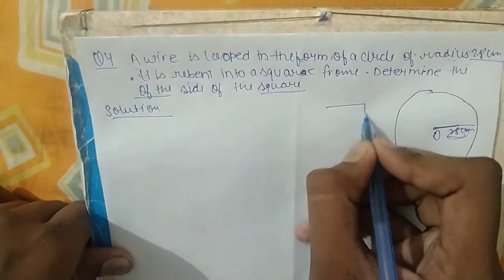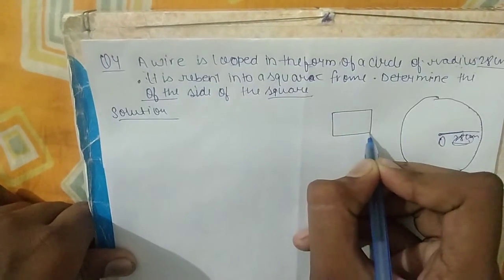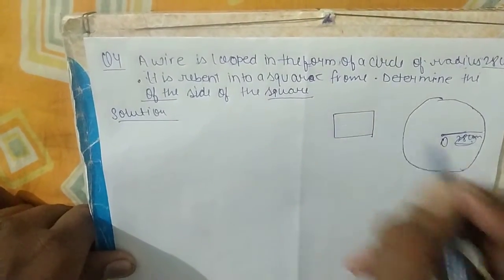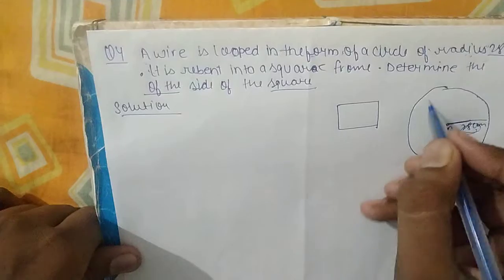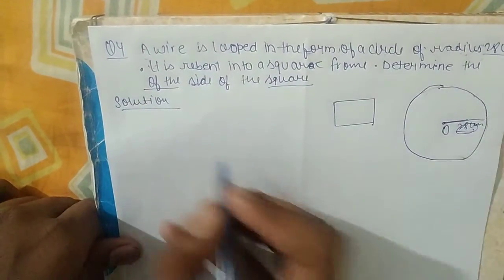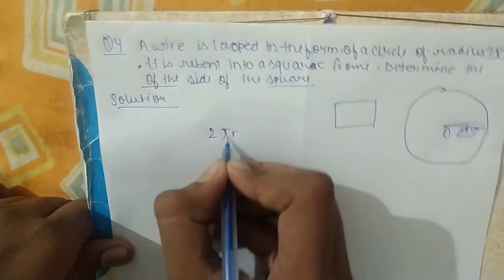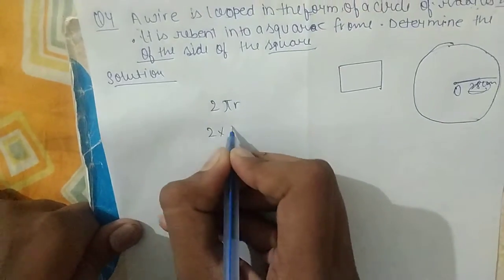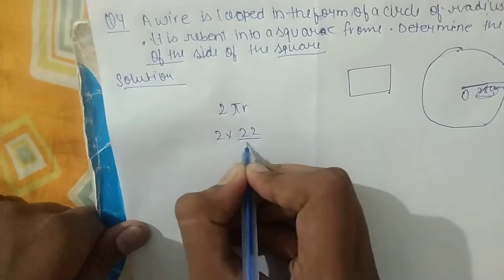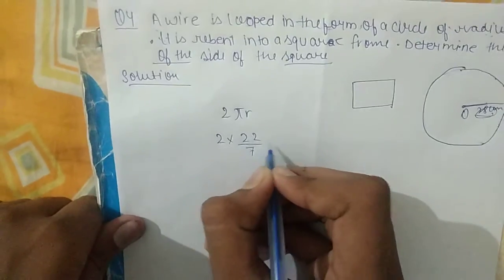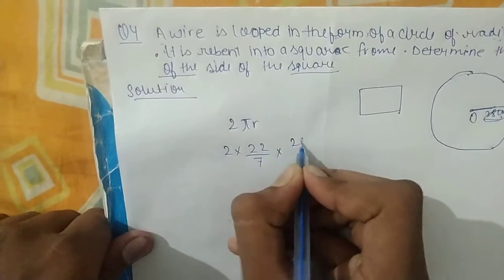Now it is re-bent in the form of a square, so first we will write the circumference formula: 2πr, radius 28 cm.